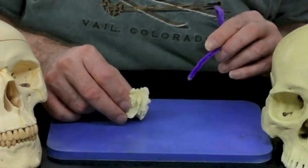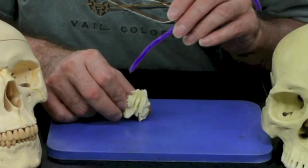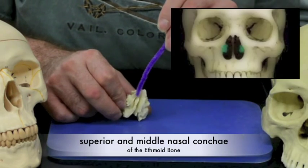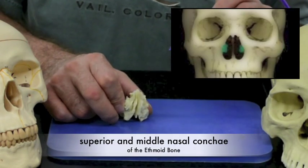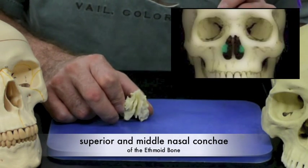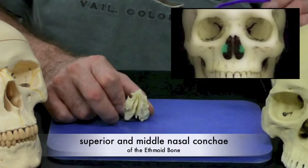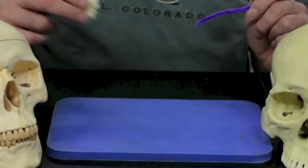Also on the ethmoid bone, we have the superior and middle nasal conchae, though it's kind of hard to define where those actually are.